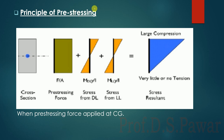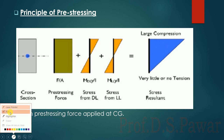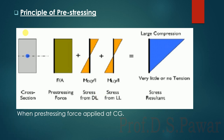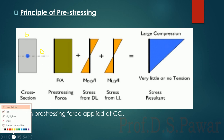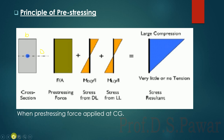Here is the principle of pre-stressing. If this is the typical beam having dimensions B and D for the cross section, we are going to calculate the stresses on the beam. We consider this as B, capital D, and this is the neutral axis.